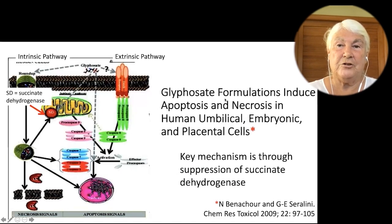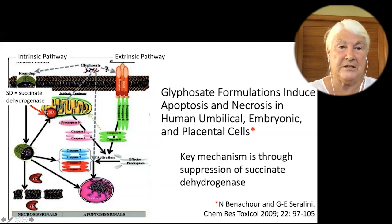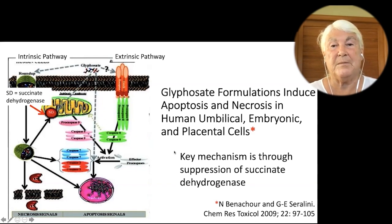A study on rat liver mitochondria exposed to Roundup found that Roundup affected succinate dehydrogenase but glyphosate alone did not, suggesting the surfactants in Roundup were necessary to help glyphosate cross the mitochondrial membranes. Another paper showed that glyphosate formulations induced apoptosis and necrosis in human umbilical, embryonic, and placental cells, and the key mechanism was suppression of succinate dehydrogenase, disrupting the mitochondria significantly.